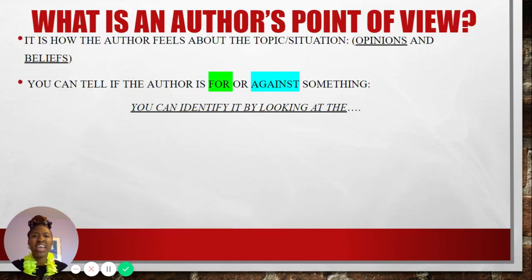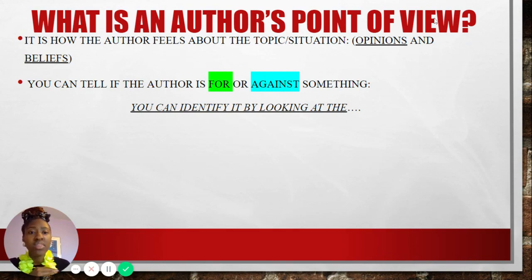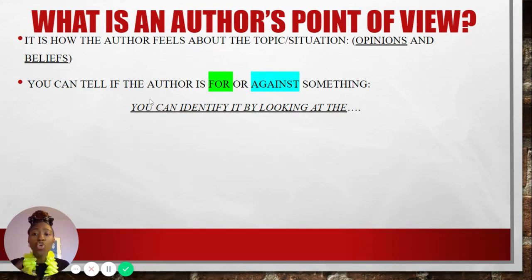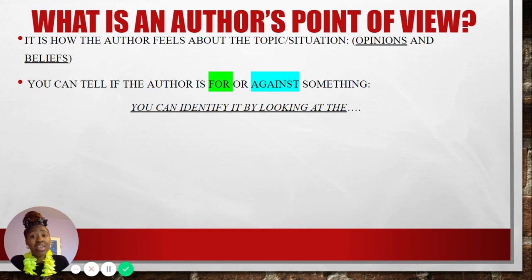You've probably been wondering — it's just been burning in your soul — what is an author's point of view? Well, I am glad you asked. An author's point of view is how the author feels or thinks about the topic or situation. When we focus on what the author thinks or feels about the topic or situation of a text, we can think about two terms: opinions and beliefs. With opinions and beliefs, this is what someone thinks and feels about a topic or situation. You can tell if an author is either for or against something by looking at the following components.